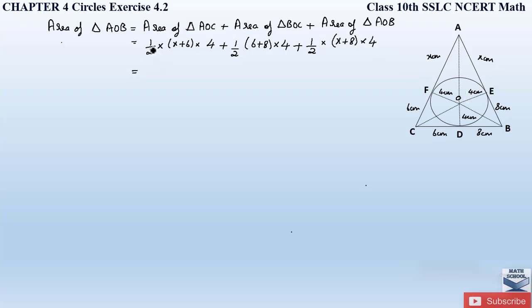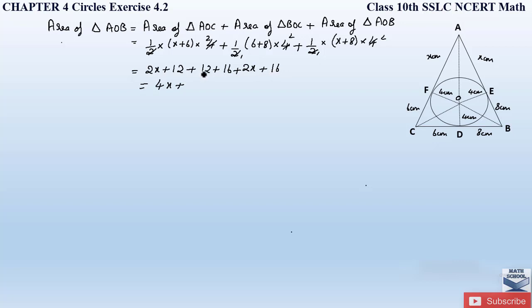Simplifying, the ½ and 4 give a factor of 2: Area = 2(x+6) + 2(14) + 2(x+8) = 2x+12 + 28 + 2x+16 = 4x + 56. This is equation number 2.